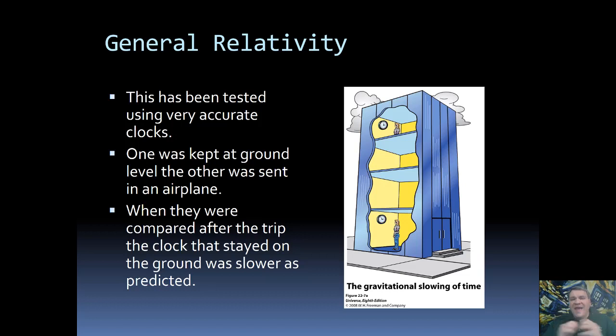However, we have tested the idea using very accurate clocks, specifically atomic clocks. These atomic clocks are precise to billionths of a second. We took two accurate clocks, made sure they were perfectly synchronized. We kept one on the ground and put the other in an airplane so it could fly way up high. After it flew around for a couple of hours, they landed and we compared the time. The one that remained on the ground was slower by the exact amount predicted. We really do have these fluctuations in time caused by gravity.